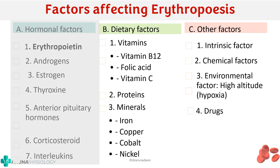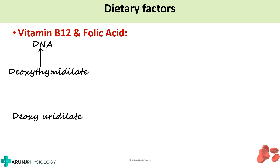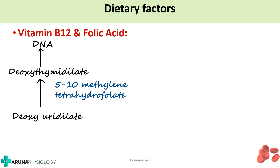Moving on to dietary factors: the first important dietary factor required for erythropoiesis is vitamin B12 and folic acid. For production of DNA, we need deoxythymidylate, which is formed from deoxyuridylate. So deoxyuridylate must be converted to deoxythymidylate for proper DNA maturation. For this step we need a compound called 5,10-methylene tetrahydrofolate. We get this from our dietary folic acid or folate, which upon intake is converted to methyl tetrahydrofolate.